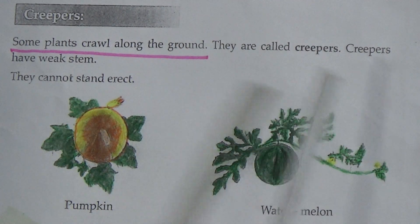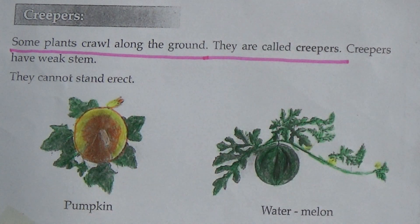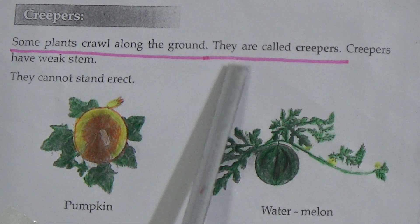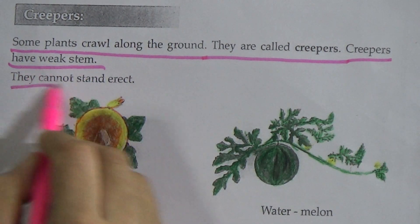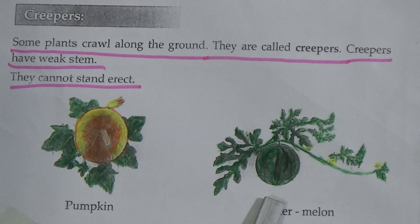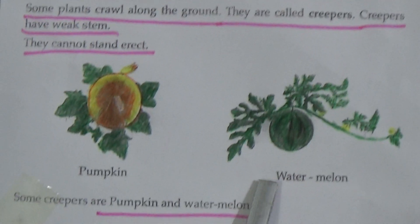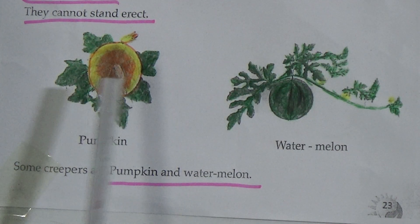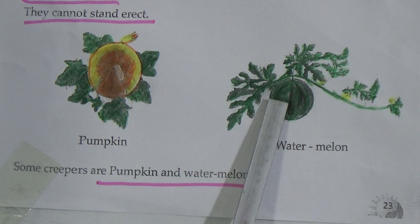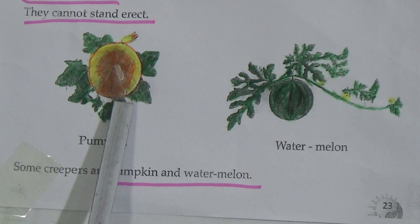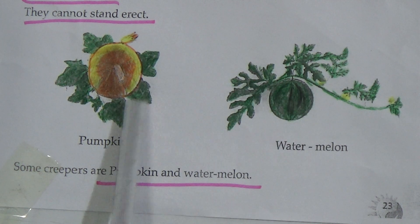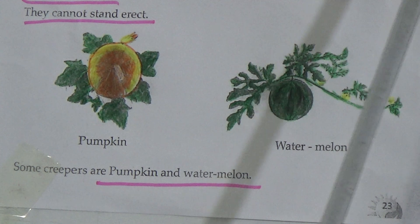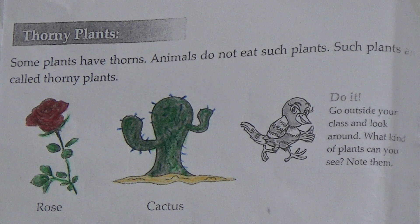Now, creepers: some plants crawl along the ground and they are called creepers. Underline this line. Creepers have weak stems — they also cannot stand erect. Examples of creepers are pumpkin and watermelon. See this figure — here are two figures: this is pumpkin and this is watermelon. Pumpkin and watermelon are examples of creepers; they crawl along the ground.